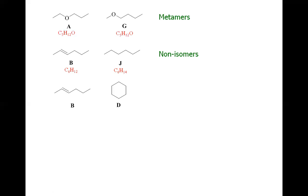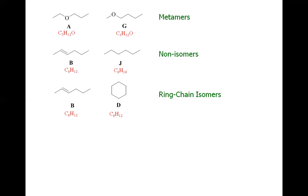For the pair B and D: they have the same molecular formula C6H12. Compound B is a chain structure while compound D is a ring, with six carbons each connected to two hydrogens. Since one member is in ring form and the other is in chain form, they are called ring-chain isomers.